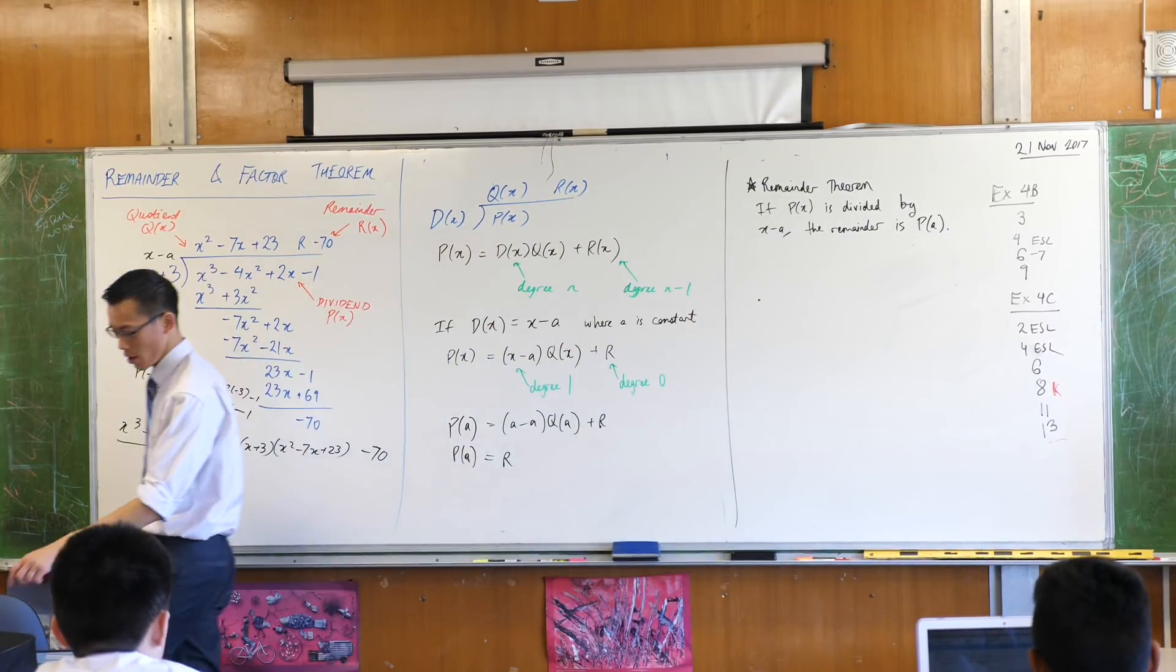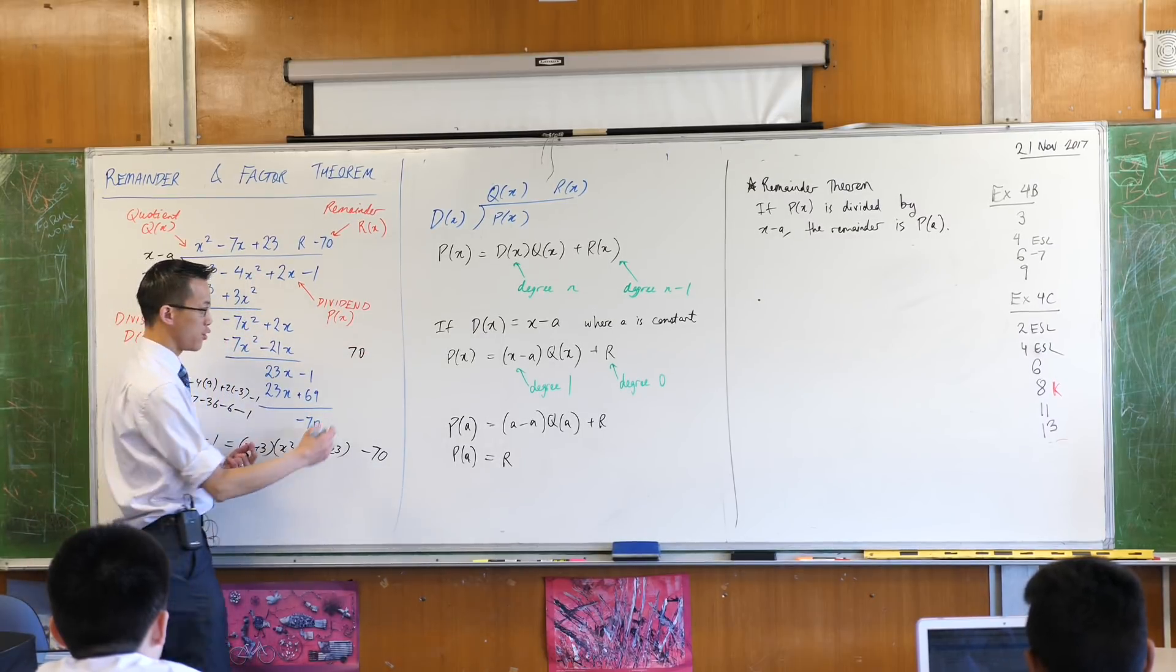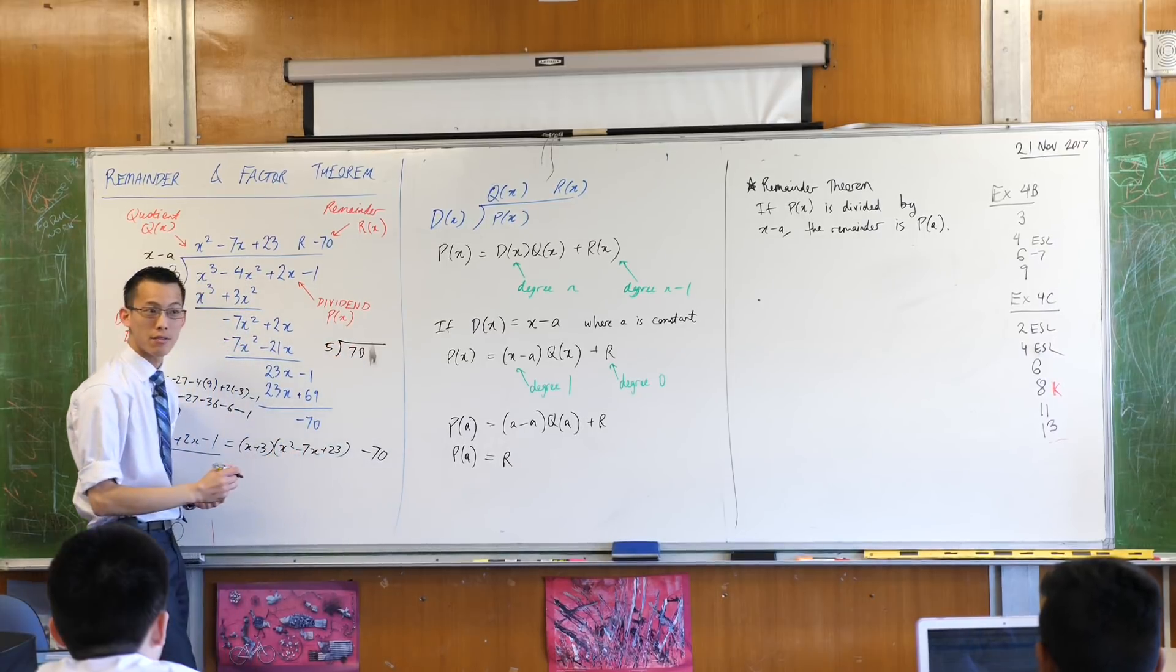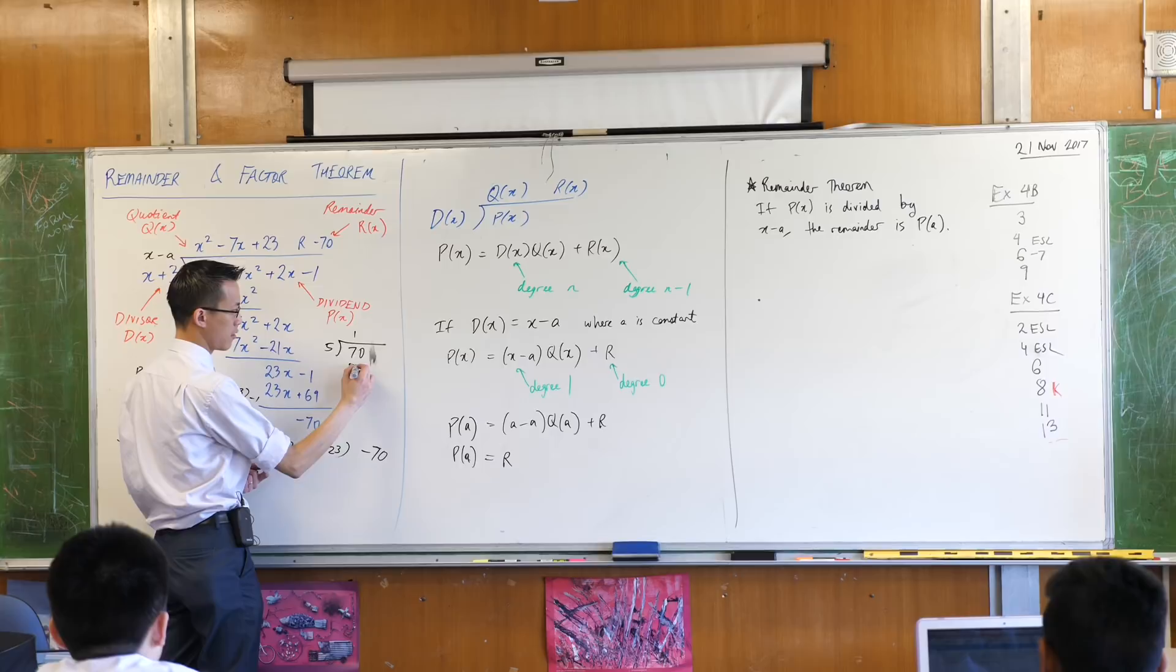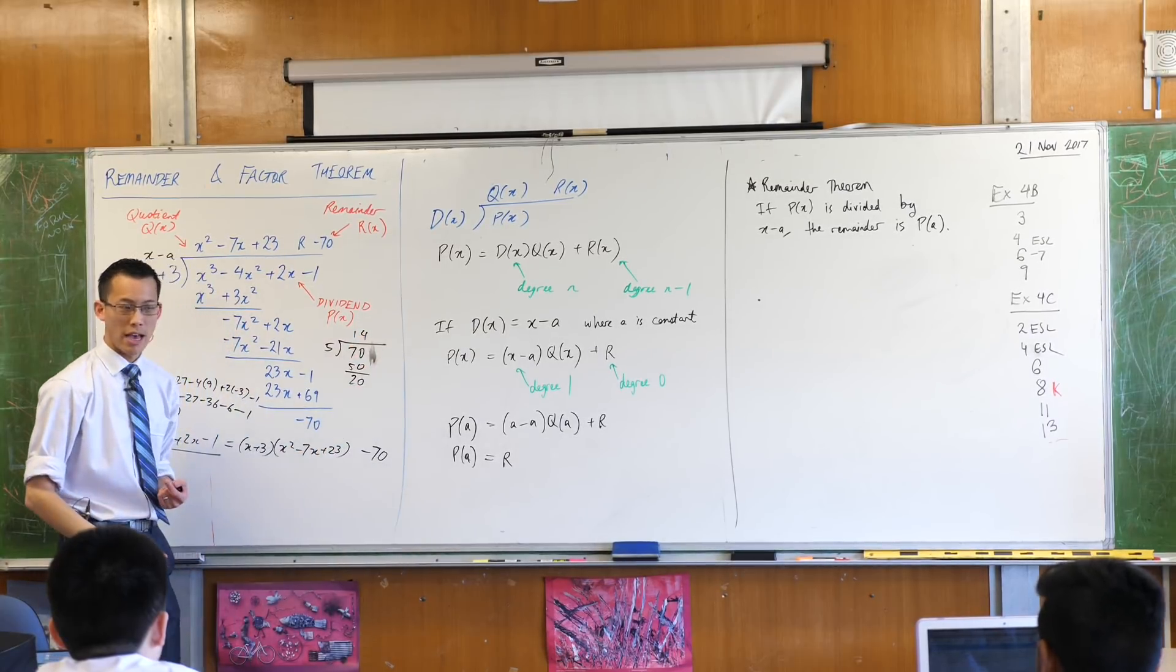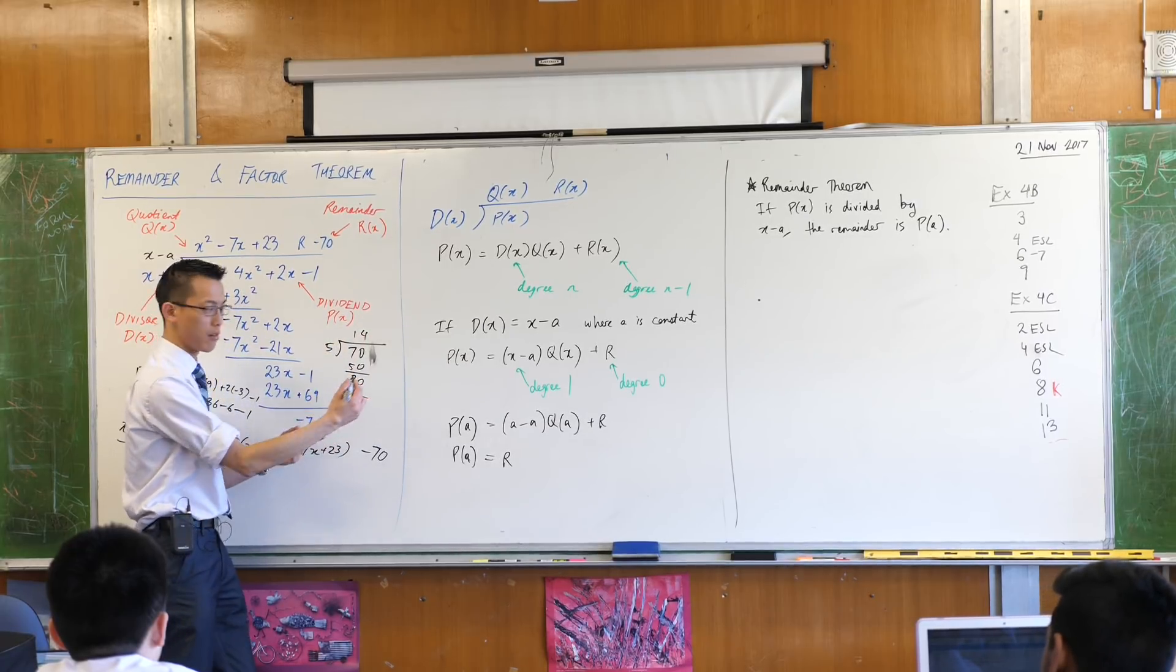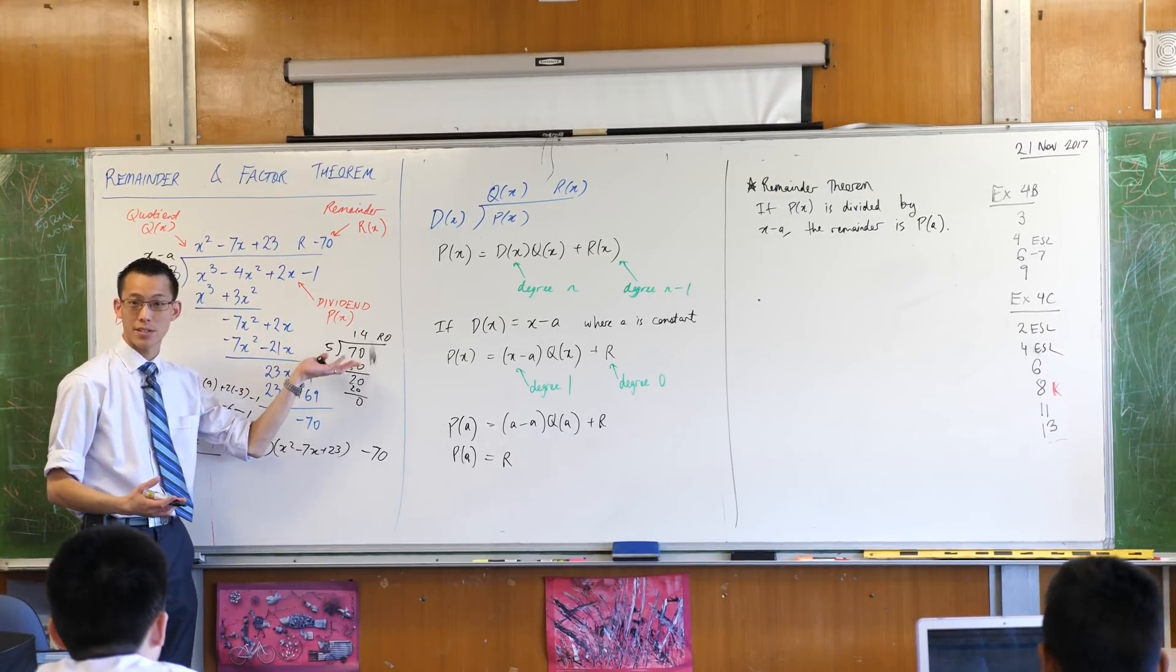If there's no remainder, it's a factor. For example, if you took 70 and then you divided it by 5, you go, okay, once 5, 0, 20, 14, and then you go again, 4 times 5 is 20, that's zero. Oh, I've got no remainder. That means 5 is a factor of 70, yeah?